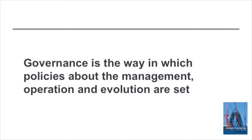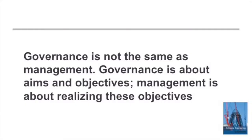What governance means is the ways in which the policies for the use, the operation, and the evolution of the system of systems are decided. The governance body sets the overall aims and objectives but is not involved in the everyday management of the system. That's the difference between governance and management: governance is about aims and objectives, while management is about how these aims and objectives are realized within the system of systems and within the individual systems making it up.